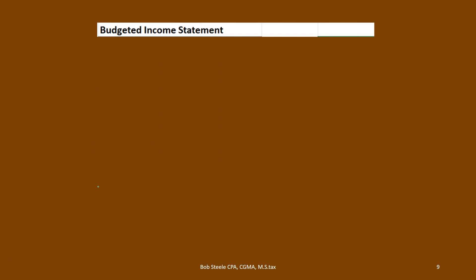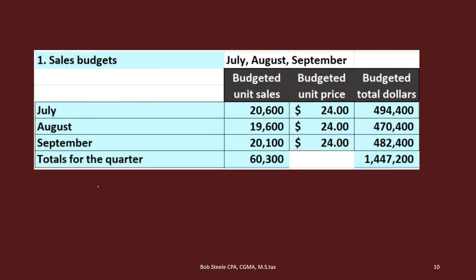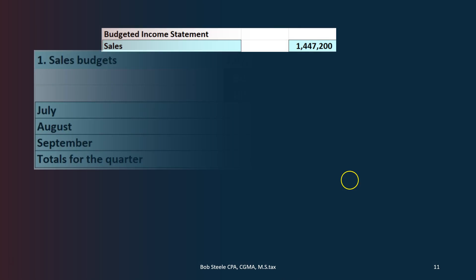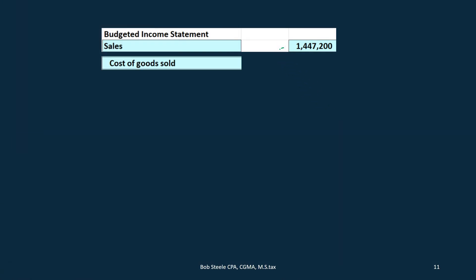Now we are on the budgeted income statement. The first piece will of course be sales — we're going to jump back to the sales budget to get the total sales figure. That comes from step one, the sales budget, and that's going to be line one of the budgeted income statement.